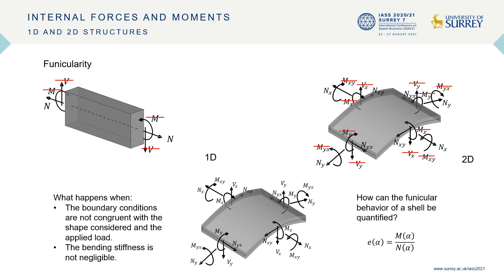In light of what was said, the solicitations acting on a funicular structure are axial or membrane, respectively for 1D or 2D structures. The funicularity depends on the boundary conditions and on the ratio between the bending and axial stiffness. So what happens when the boundary conditions are not congruent with the shape considered and the applied load, or when the bending stiffness is not negligible?